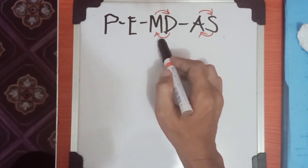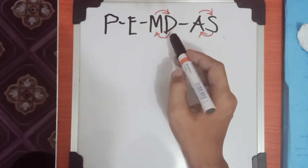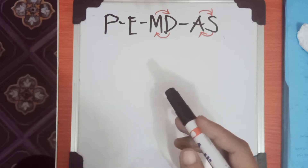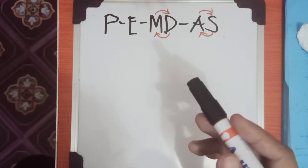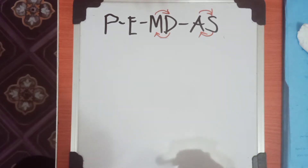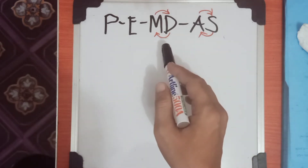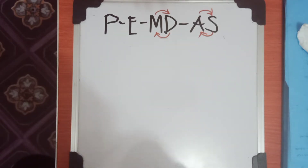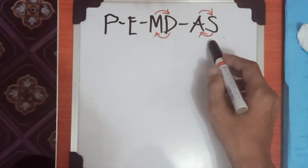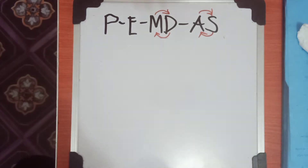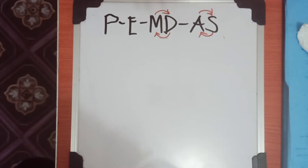The reason I put an arrow on Multiplication and Division is because you have to evaluate which one occurs first — whichever comes first from left to right, that is the one you solve first. For example, if Division comes first, you solve Division before Multiplication. Addition and Subtraction follow the same process: solve whichever occurs first from left to right.